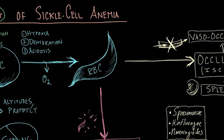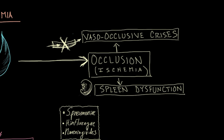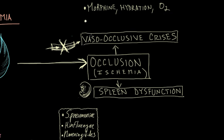For some of the acute interventions — in addition to hemolysis, there is occlusion. We have these painful vaso-occlusive crises, and the way those are managed acutely is primarily through morphine for pain control, hydration, and supplemental oxygen. That's the first line. However, if the patient does not respond to these initial measures, a more drastic approach is needed.